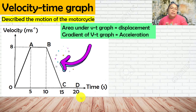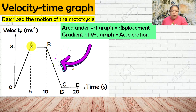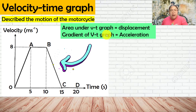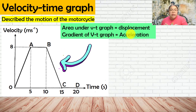Now we look at the velocity-time graph. Two important facts: the area under the VT graph gives displacement, and the gradient of the VT graph gives acceleration. Just now, for the DT graph, the gradient gave velocity. For the VT graph, we have two functions — we can find displacement from the area, or acceleration from the gradient.